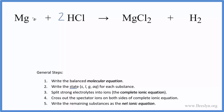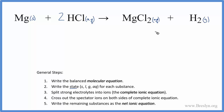After balancing, I need to write the state of each substance. Magnesium by itself with no plus or minus charge is going to be a solid. HCl is a strong acid — that's going to be aqueous. Magnesium chloride: chlorides tend to be soluble in water, so we write aqueous. Hydrogen is a gas. Those are the states for each substance in this reaction.